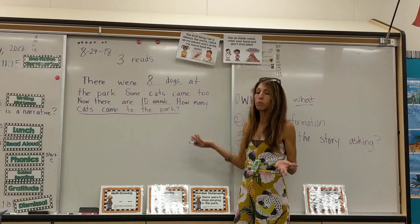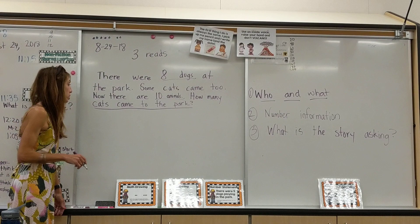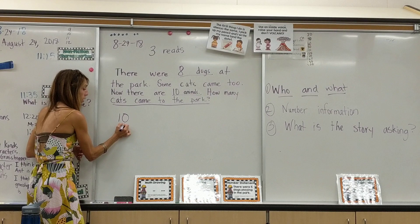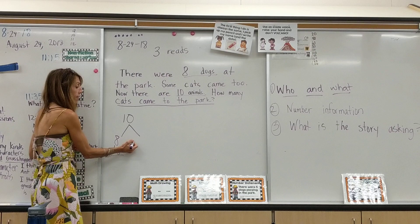Then we have them solve it. When they're solving it, we ask them to do a few things: a math drawing, labeling, number statements, number bonds, and equations. It's usually very easy for them to start with a number bond — they find out what the whole is. There are ten animals altogether, eight were dogs. Adding labels really helps the kids know what they're looking for.